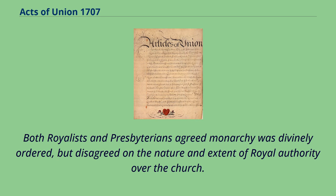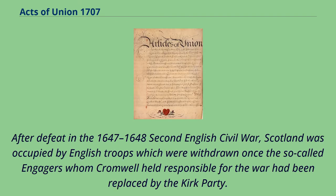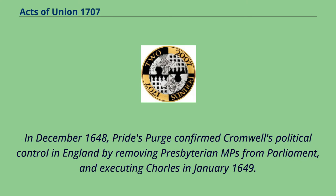Both Royalists and Presbyterians agreed monarchy was divinely ordered, but disagreed on the nature and extent of royal authority over the Church. When Charles I surrendered in 1646, they allied with their former enemies to restore him to the English throne. After defeat in the 1647–1648 Second English Civil War, Scotland was occupied by English troops, which were withdrawn once the so-called Engagers whom Cromwell held responsible for the war had been replaced by the Kirk party. In December 1648, Pride's Purge confirmed Cromwell's political control in England by removing Presbyterian MPs from Parliament, and executing Charles in January 1649.